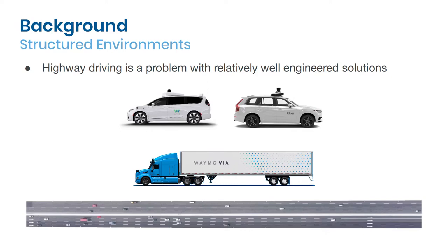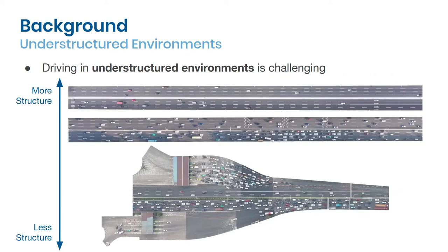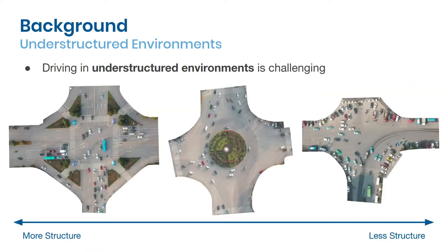We all know that industry leaders such as Waymo and Uber have already solved autonomous driving in relatively well-structured environments, for example driving on a highway in free flow. However, as highways become more and more crowded, the order or the structure of the roads will become more and more chaotic. This makes safe and efficient driving very hard. This also applies to urban streets. We have not yet solved the driving problem in those unstructured road environments, which are also very common in many developing countries.